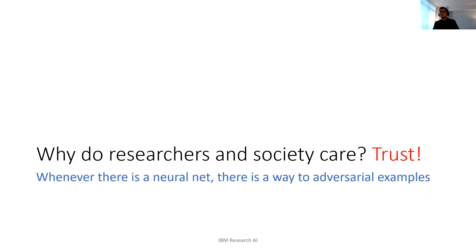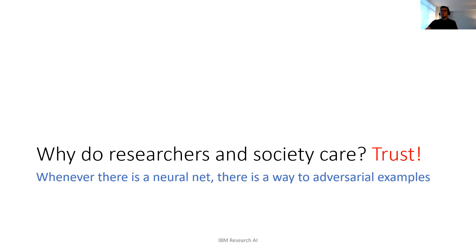Let us start with a somewhat pessimistic conclusion. Why do researchers and society care about robustness? Deep down, it's about trust — can I trust AI models or not? One thing realized over the years is that whenever there is a neural network, there is a way to generate adversarial examples. We will tell you why it is so easy to generate them.